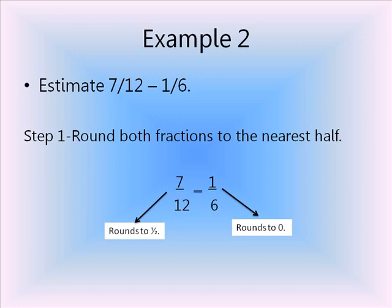Using the strategies I've taught before, 7 twelfths is going to round down to 1 half. 1 sixth is actually going to round down to 0.